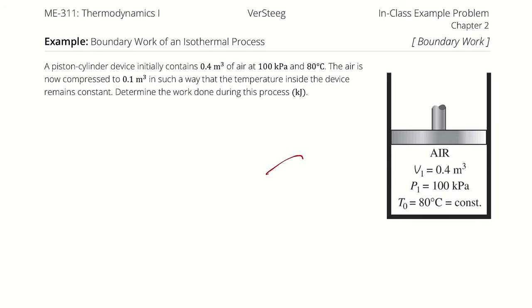A piston-cylinder device initially contains 0.4 cubic meters of air at 100 kilopascals and 80 degrees Celsius. The air is now compressed — note, compressed — it's going to be a decrease of volume.